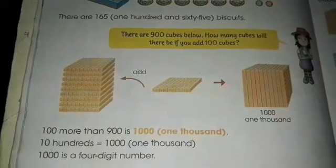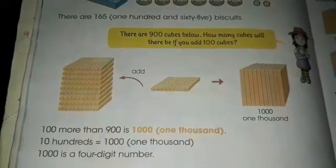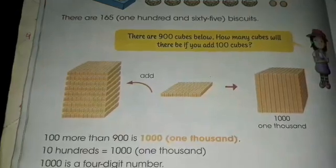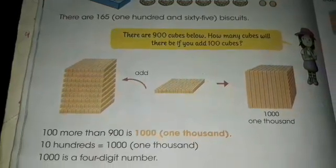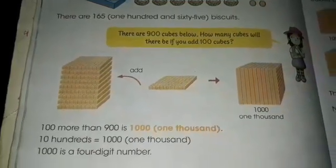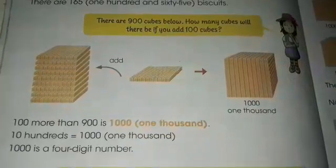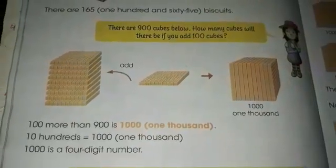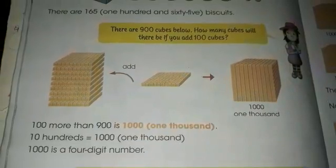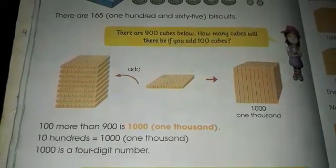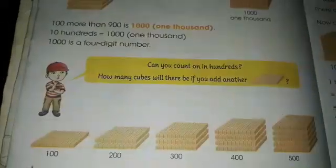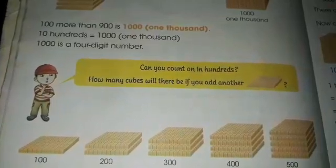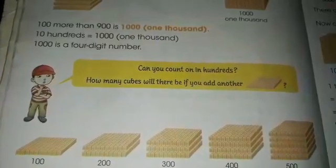This little kid Twinkle is thinking: there are nine hundred cubes below. How many cubes will there be if you add 100 cubes? Yes — one hundred more than nine hundred is one thousand. What we have to remember here: ten hundreds is equal to one thousand, and one thousand is a four-digit number.